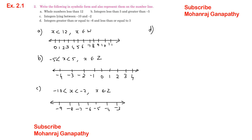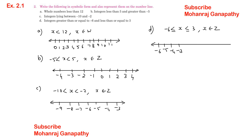Part D: integers greater than or equal to minus 6 and less than or equal to 3, where x belongs to integers. Since we include minus 6: minus 6, minus 5, minus 4, minus 3, minus 2, minus 1, 0, 1, 2, 3. The number line is very important. Integers are very clear; if you understand them, they are very important for higher classes.